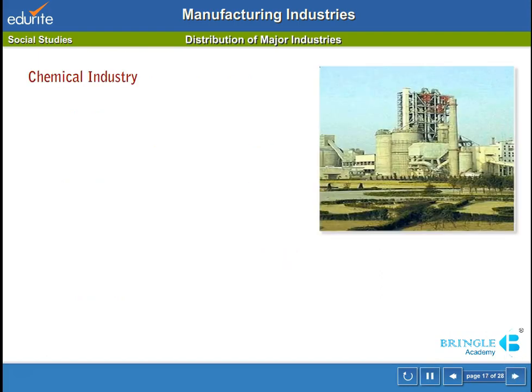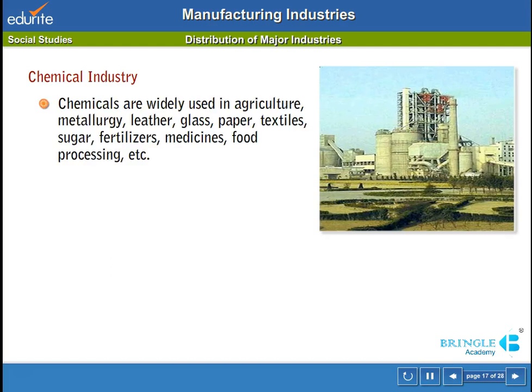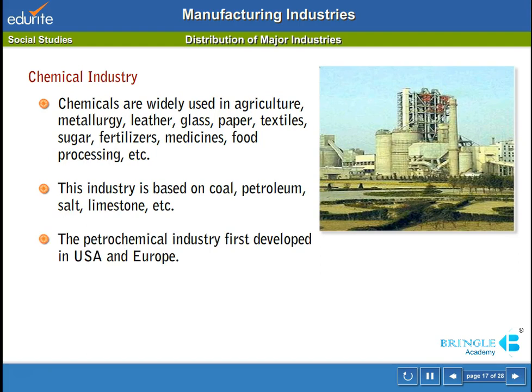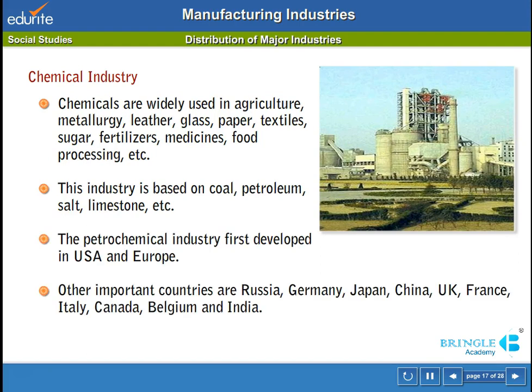Chemical industry: chemicals are widely used in agriculture, metallurgy, leather, glass, paper, textiles, sugar, fertilizers, medicines, food processing, etc. This industry is based on coal, petroleum, salt, limestone, etc. The petrochemical industry first developed in USA and Europe. Other important countries are Russia, Germany, Japan, China, UK, France, Italy, Canada, Belgium and India.